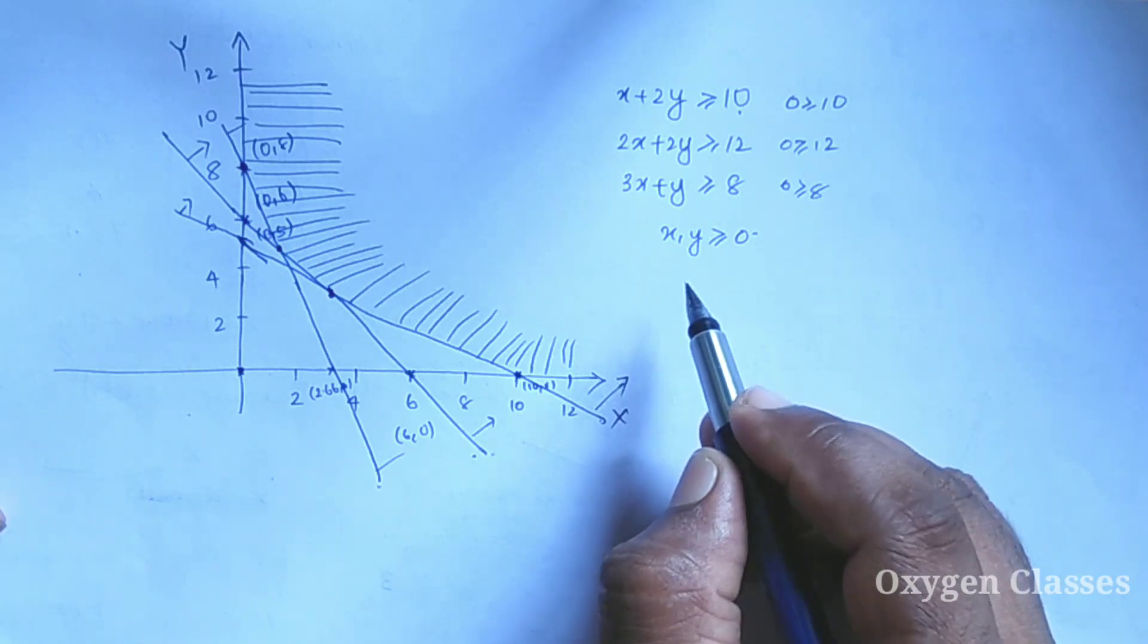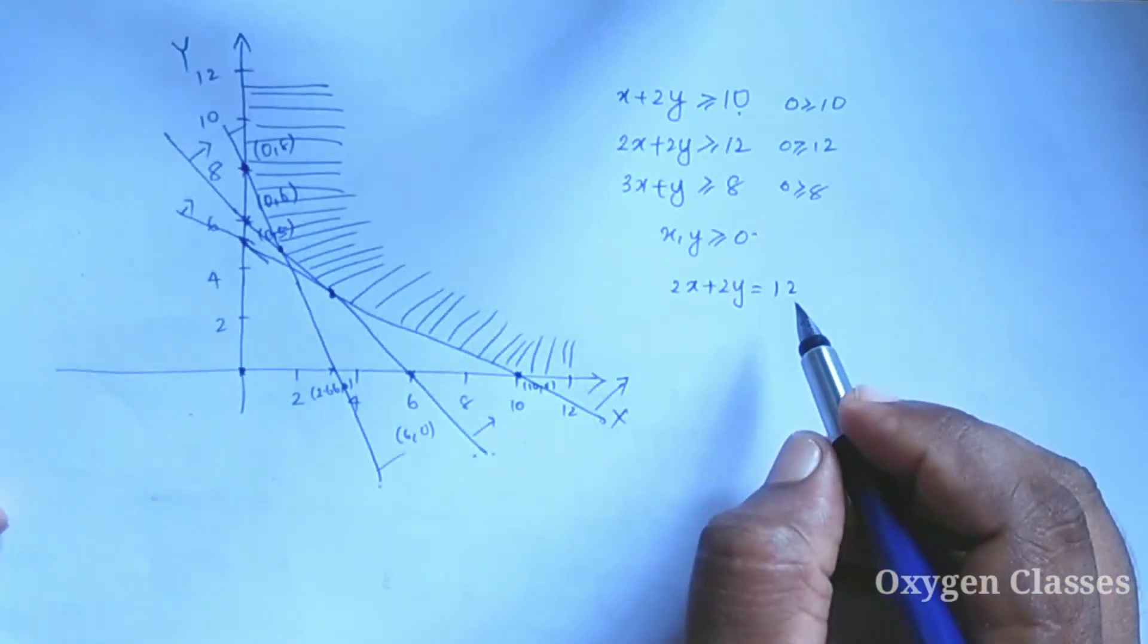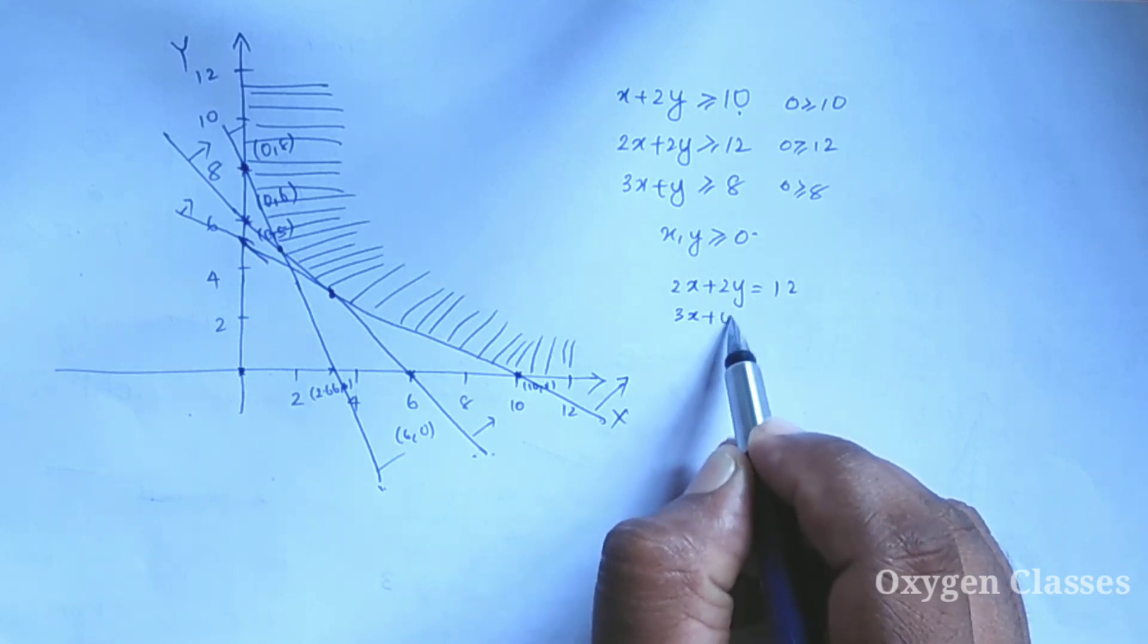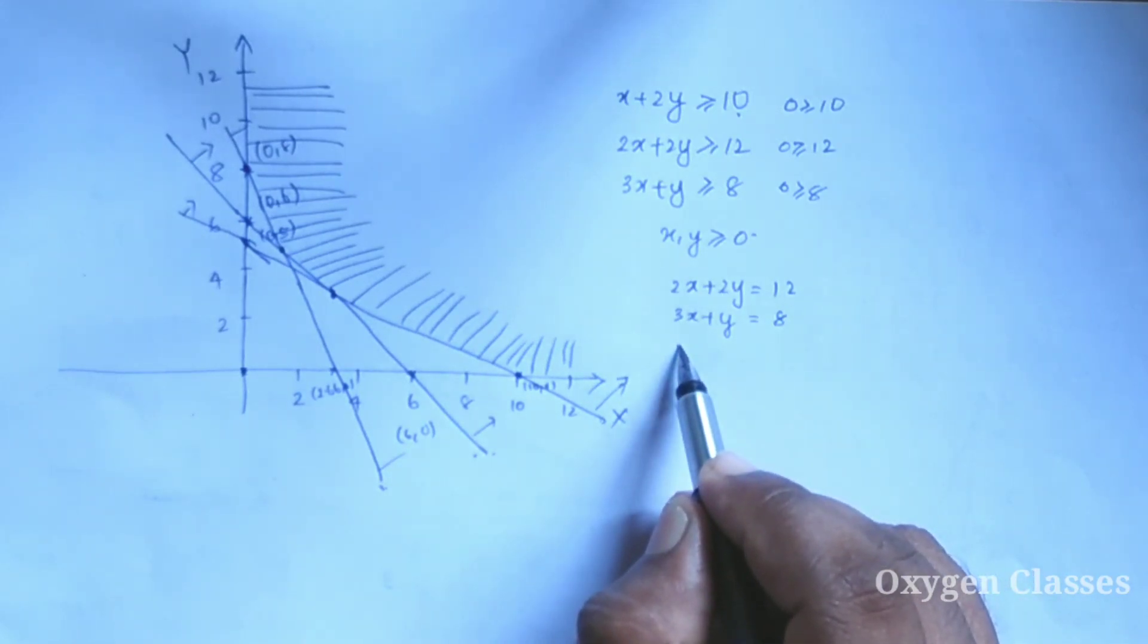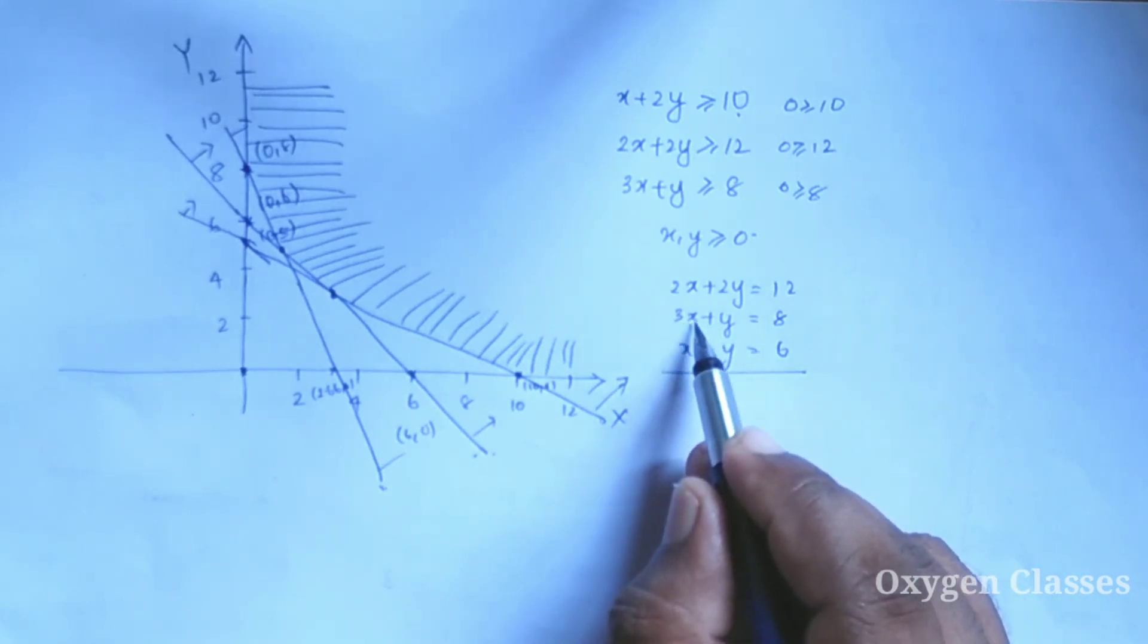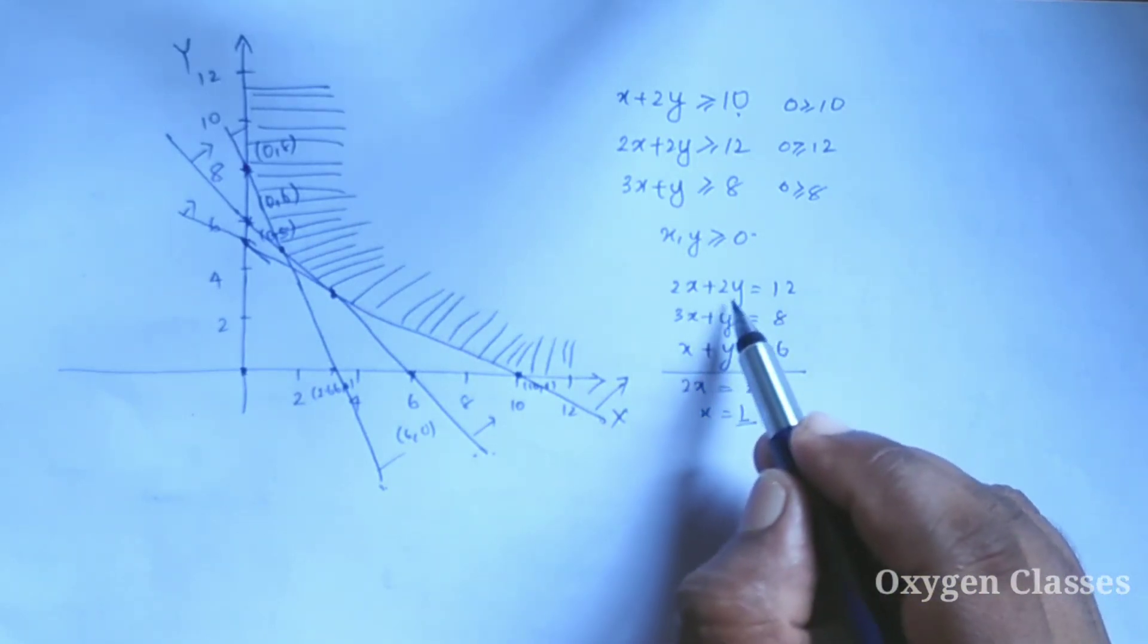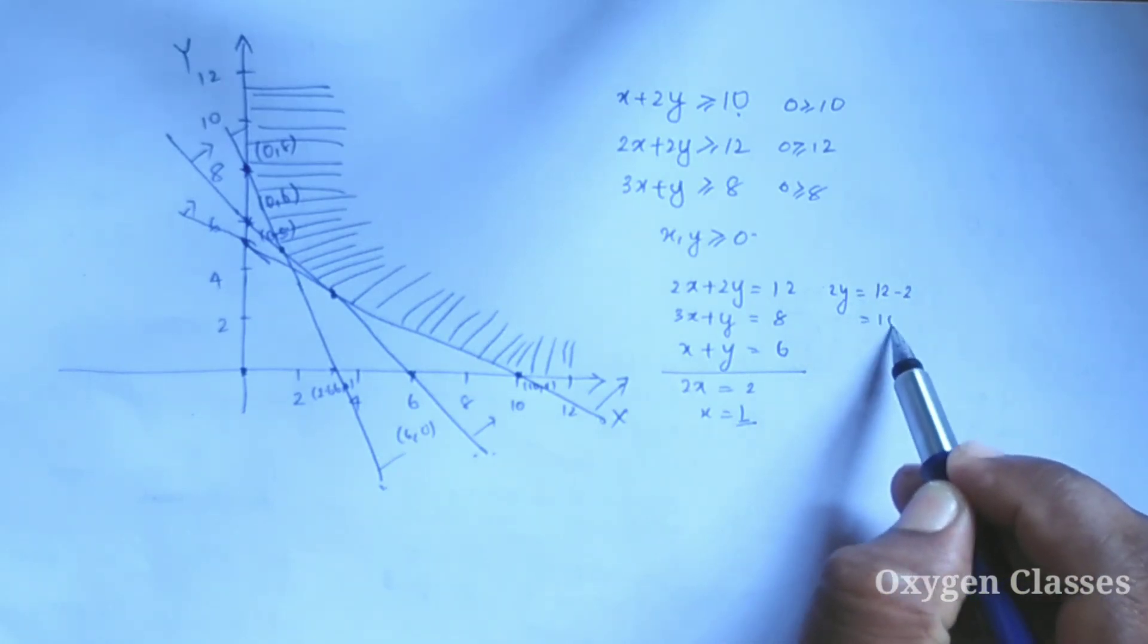We solve the second and third lines. Second line: 2X plus 2Y equal to 12. Third line: 3X plus Y equal to 8. Subtracting twice the second equation from the first gives negative X equals negative 2, so X equals 2. Substituting X equals 2 into the second equation: 2 plus Y equals 6, so Y equals 4.